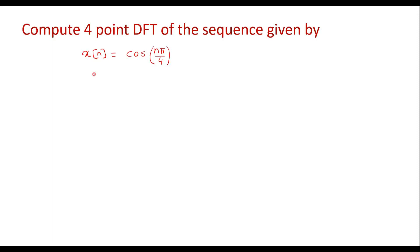In this lecture, we will study how to compute the 4-point DFT of the given discrete signal. Here the given discrete signal is x(n) = cos(n·π/4). Now let us see how to compute the 4-point DFT of this, that is X(k).